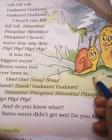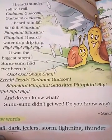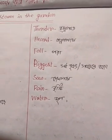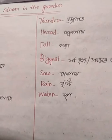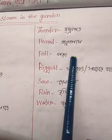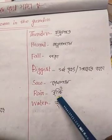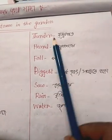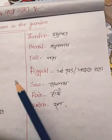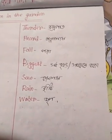বৃষ্টিটা যখন হচ্ছিল, শুনু শুনু সে কলসের ভিতরে ঢুকে ছিল, তাই সে ভিজেনি। Thunder মানে বজ্রপাত, hard মানে শুনলাম, fall মানে পড়া, biggest মানে সবচেয়ে বড়, rain মানে বৃষ্টি, water মানে জল।